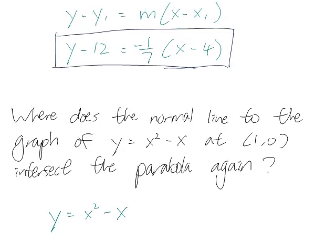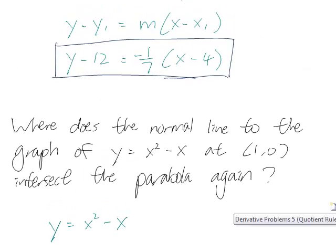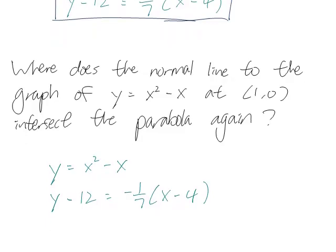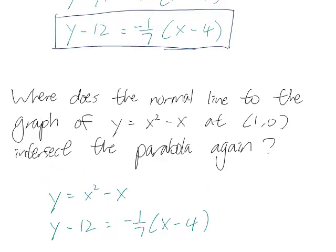and then we have the equation of the normal line, which we already got, which is y minus 12 equals minus 1 over 7, x minus 4.